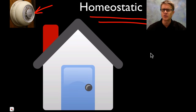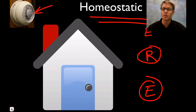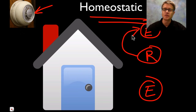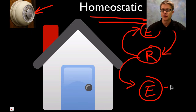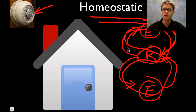Basically all homeostatic loops are going to have a receptor — in this case it would be the thermostat. And then they're going to have effectors. The effectors are going to be the parts that are affected by changes in the stimuli. So if the temperature goes above 70 degrees it's going to turn off, and if it goes below that it's going to turn on and raise the temperature. Every homeostatic loop has this figure-8 shape, with the receptors in the middle and the effectors on either side.